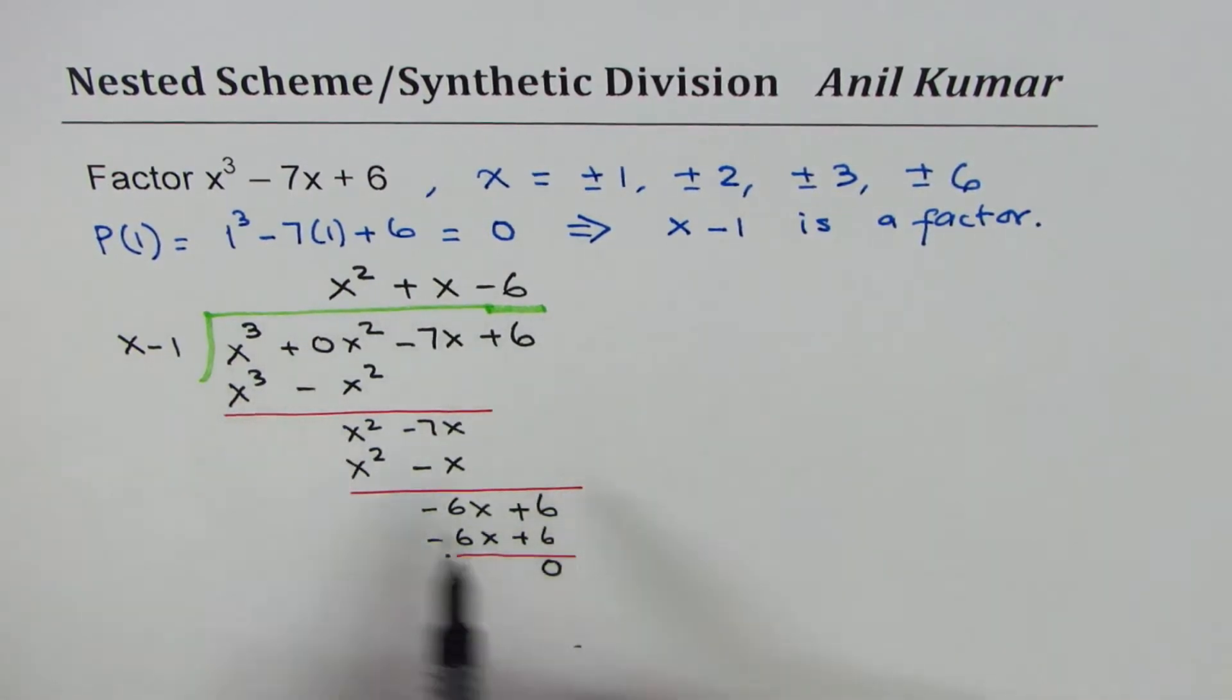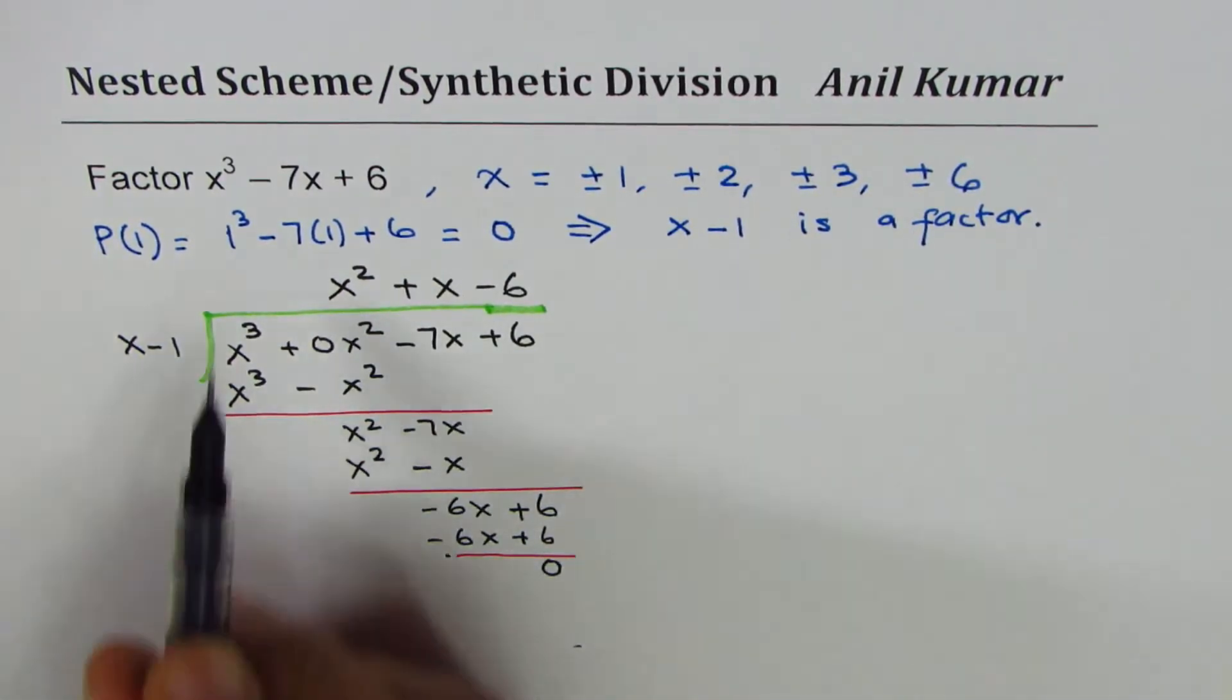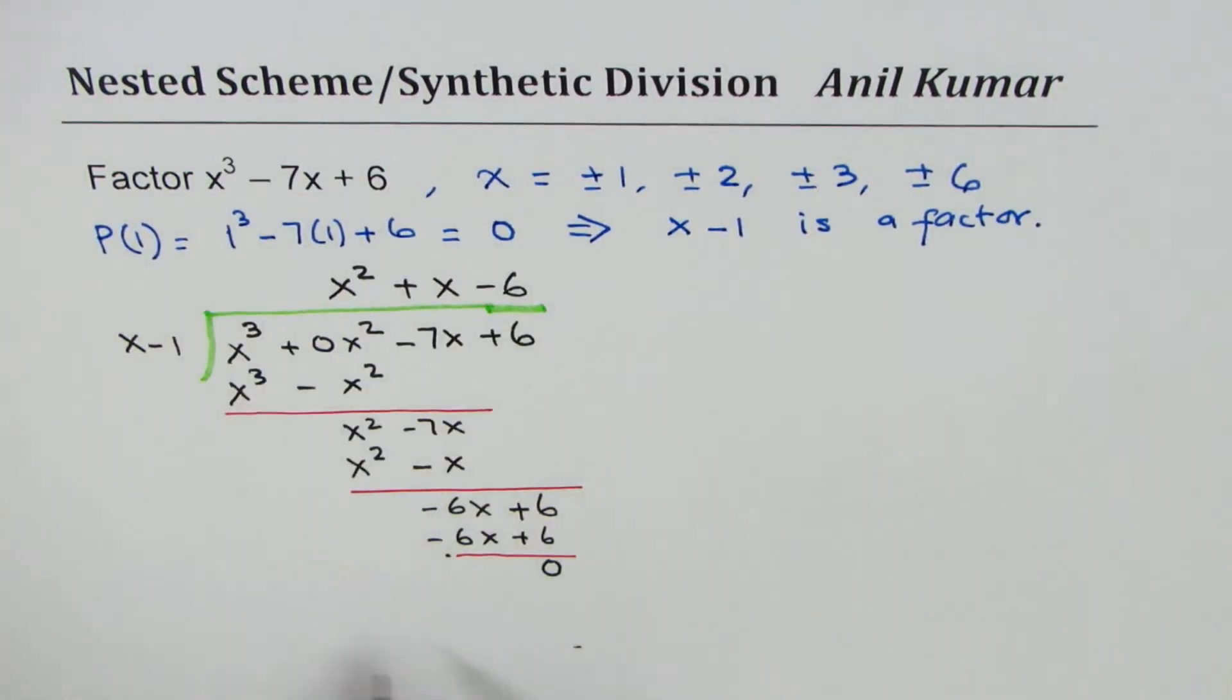So that means x square plus x minus 6 is the other factor. So we already have 2 factors. We could now write x cube minus 7x plus 6 as equal to x minus 1 times x square plus x minus 6.